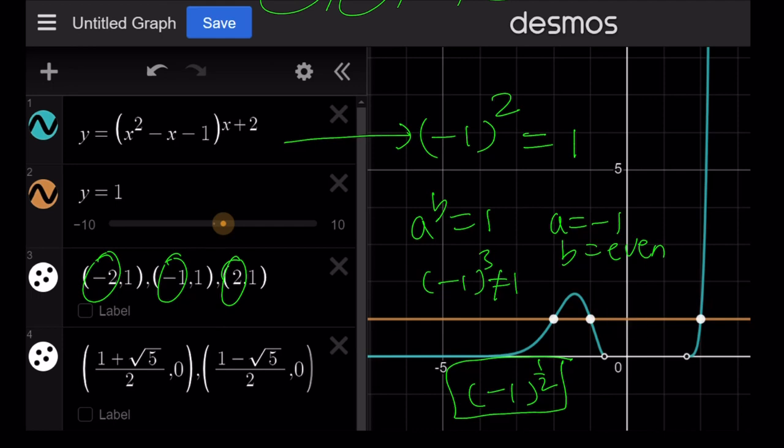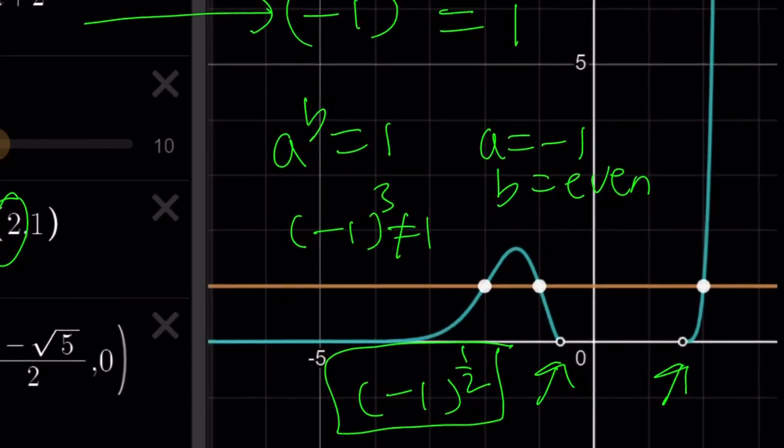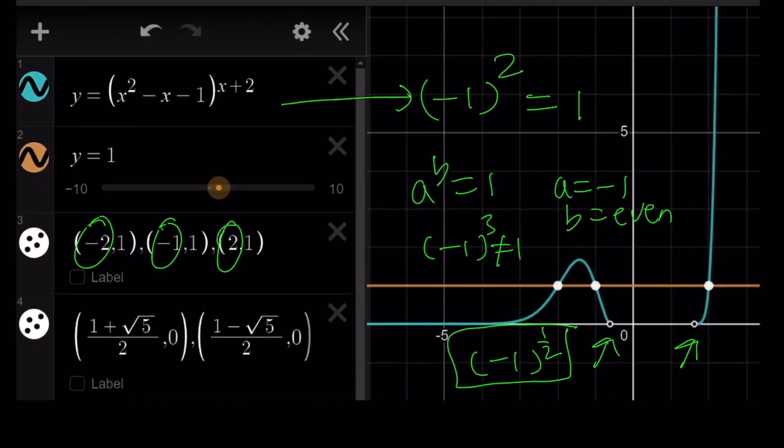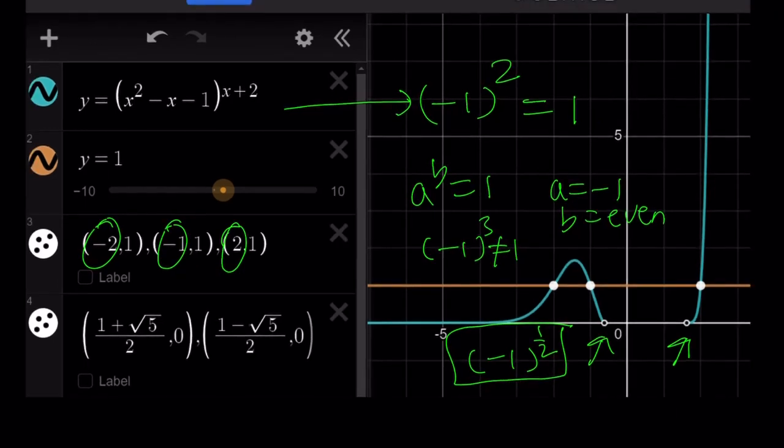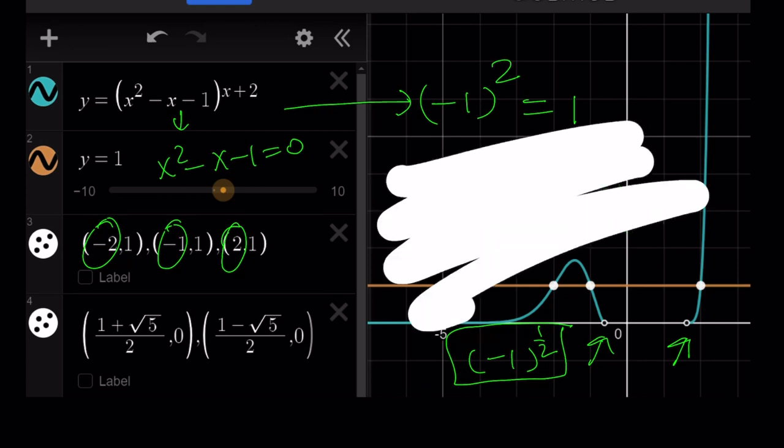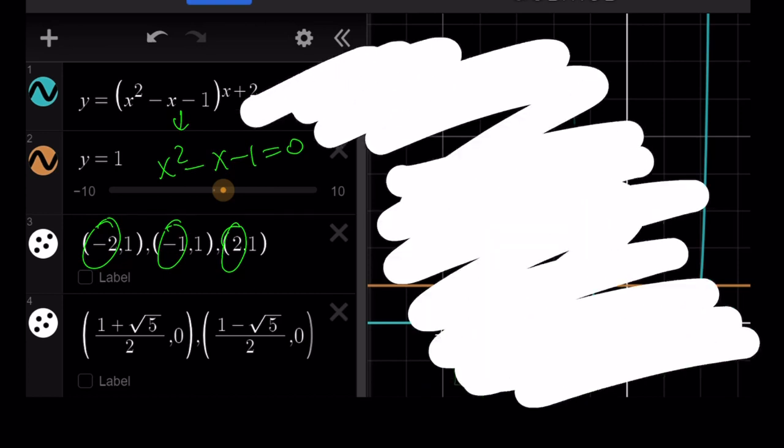But there's also a section of the graph that we don't see between two points. You see those two dots? Those two dots are where the function equals 0. So here's where the base equals 0 comes in. So when the base is equal to 0, x squared minus x minus 1 equals 0, this is going to give you some interesting results. Sorry about the crowded space. Let me go ahead and clean this up so I can kind of write it down here.